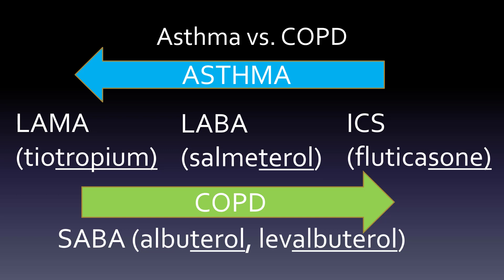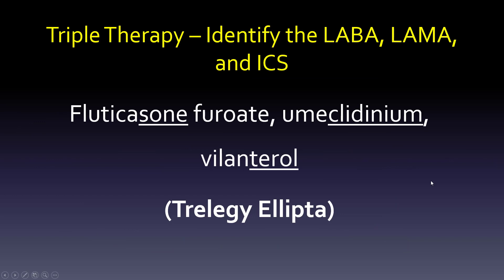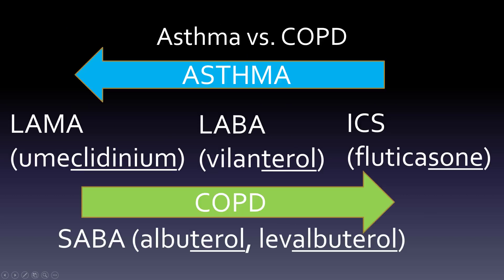Let's try an example with a drug that has all three components: Trelegy Ellipta. Identify the LABA, LAMA, and ICS. Underlining the endings: fluticasone (ICS), umeclidinium (LAMA), and vilanterol (LABA). In our arrows: the -clidinium goes in the long-acting muscarinic antagonist position, vilanterol goes in the long-acting beta-2 agonist position, and fluticasone is the inhaled corticosteroid. We still keep albuterol or levalbuterol as our rescue inhaler.